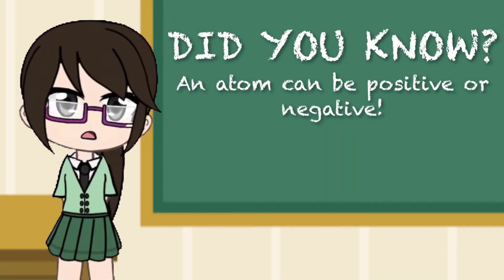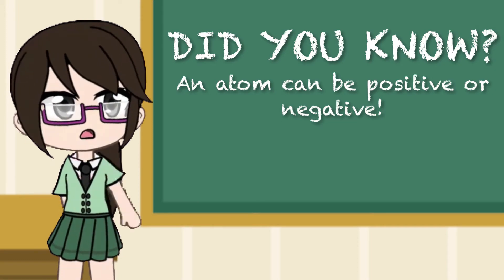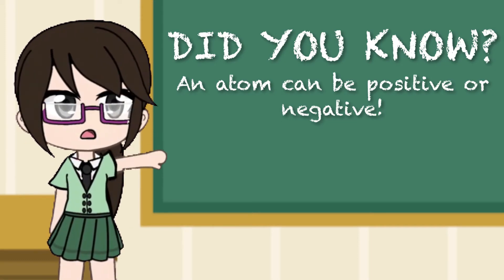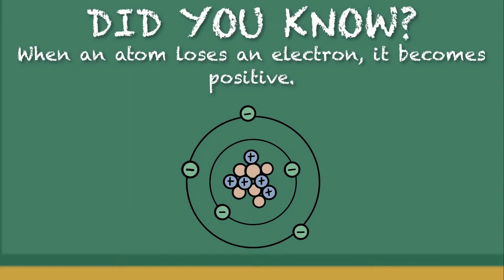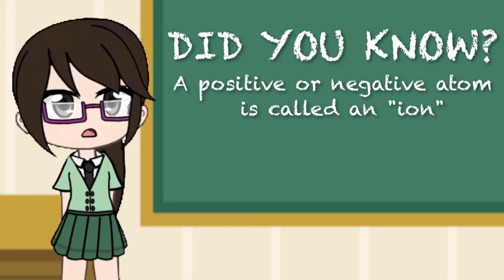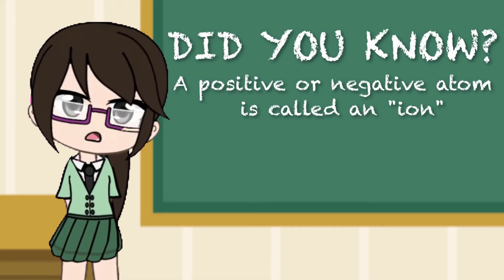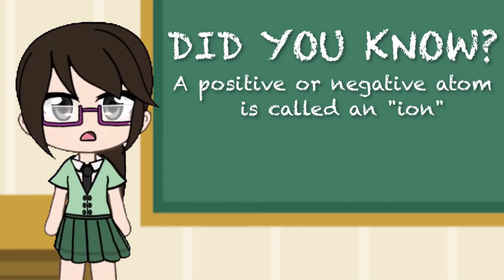Atoms can be positive or negative. When an atom loses an electron, it becomes positive. A positive or negative atom is called an ion.